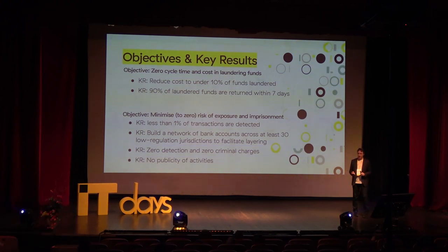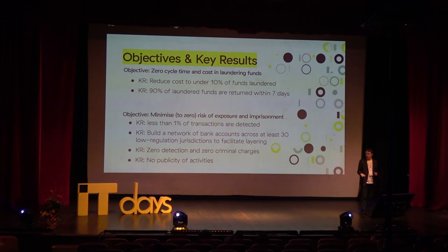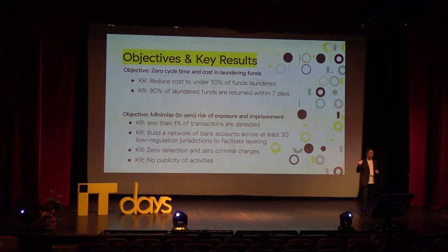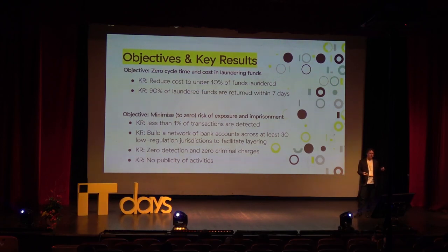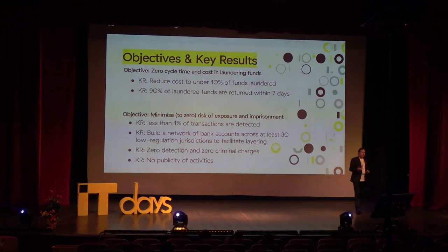As money launderers go through this process, there are two things they're really trying to optimize for: efficiency and minimizing risk. In terms of efficiency, every time you change currency or move money there's a small percentage lost, and you want to minimize that cost. You also want the process to be quick — if it takes six months to launder your funds, that's pretty inefficient. You want your money to move rapidly through to the other end — essentially putting it on rapid wash.